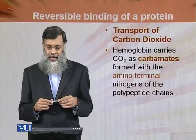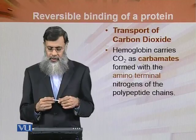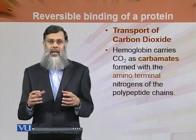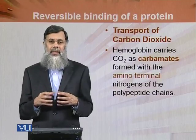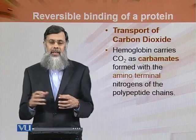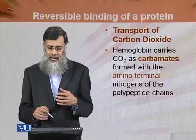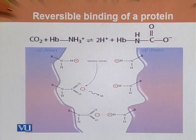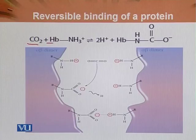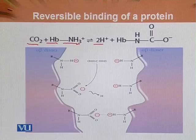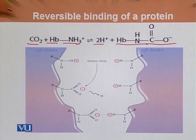Hemoglobin carries carbon dioxide as carbamates formed with the amino terminal nitrogen of the polypeptide chains. Oxygen آکے ferrous پہ لگتی ہے، لیکن carbon dioxide ferrous پہ نہیں لگتی — یہ carbamates بناتی ہے amino terminal end پہ، mostly valine residues کے ساتھ ملکے۔ اس diagrammatic presentation میں ہم دیکھ سکتے ہیں کہ CO2 نے hemoglobin کے amino terminal end کے ساتھ ملکے carbamate بنا لی۔